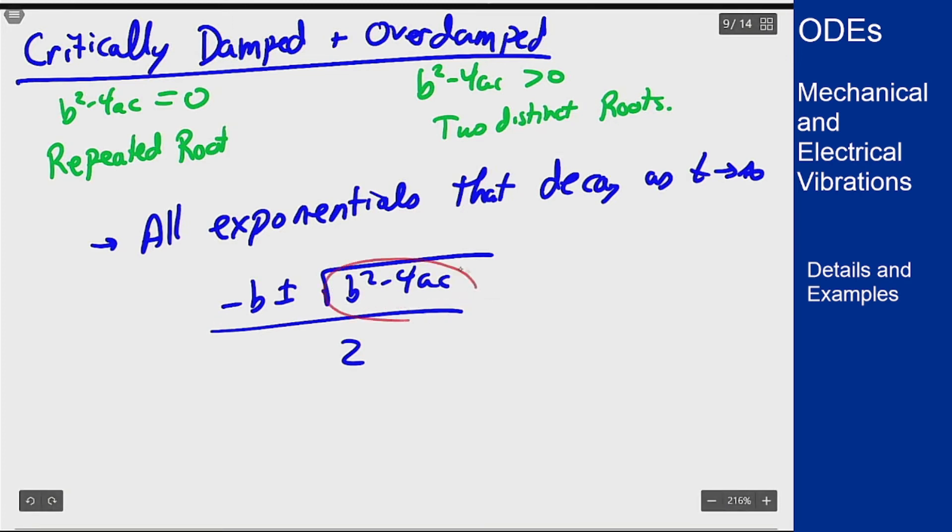This number here is going to be positive, always going to be less in absolute value than b is because it's b² take away some bit and then square root it. So it's going to be smaller than b in which case -b plus it will still be negative. So both roots will always be negative here. Which is good for our physical model because a positive root here means a solution that explodes to infinity very quickly which doesn't really work for a mass on a spring.